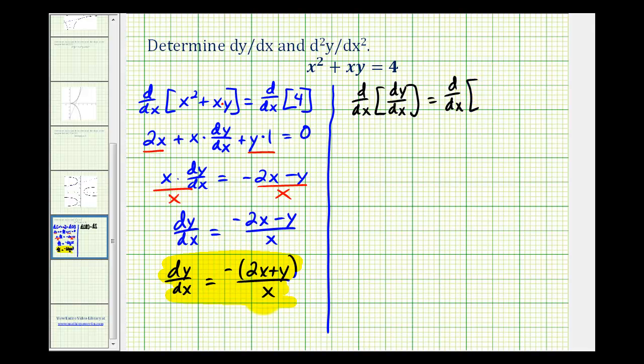And since we'll have to apply the quotient rule here, I'm going to go ahead and use this form of the first derivative. So the numerator is negative 2x minus y divided by x. So the derivative of the derivative with respect to x would be our second derivative, d squared y over dx squared equals. And here's where we'll have to apply the quotient rule. So starting with the denominator, we'll have the denominator squared.